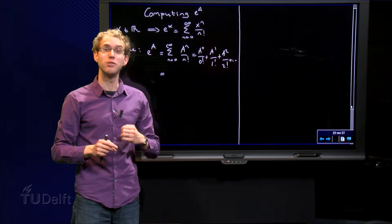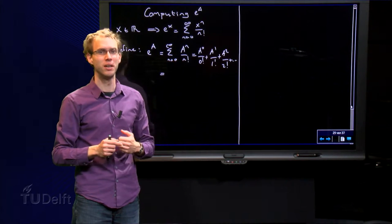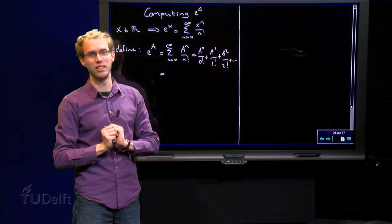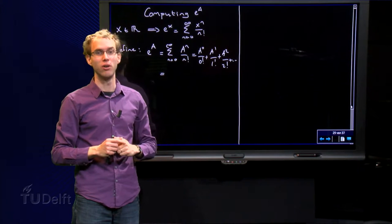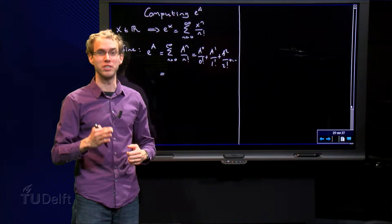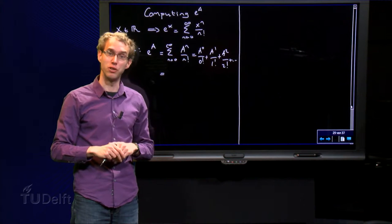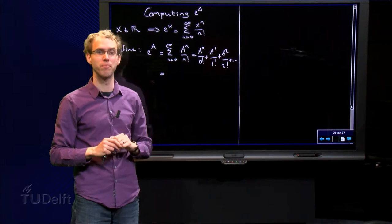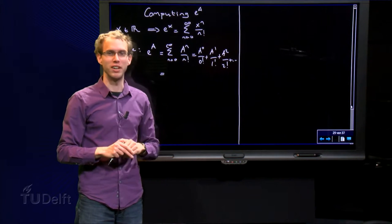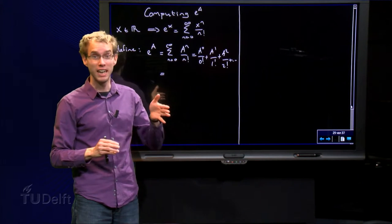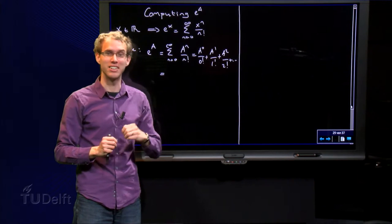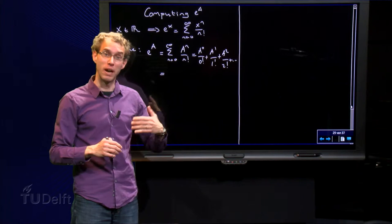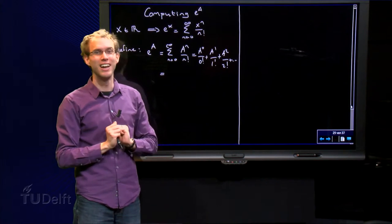Can we compute e to the power a, where a is a matrix? Why would we want to do that in the first place? Let us start with the second question. When you have a differential equation of the form x-prime equals a times x, where a is a scalar, then we know that we have solutions of the form e to the power at. If we want to study differential equations of the form x-prime equals a times x, where x is a vector and a is a matrix, then we want to do something similar. So we come back to the first question: can we do this? Let us see in this video.